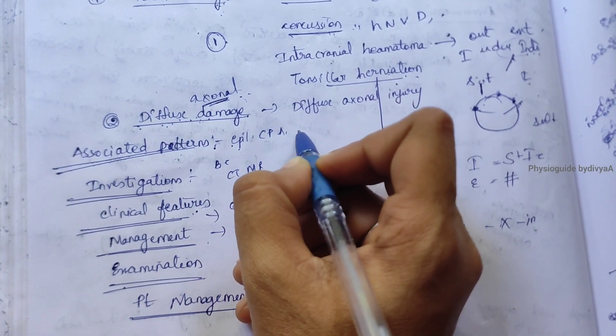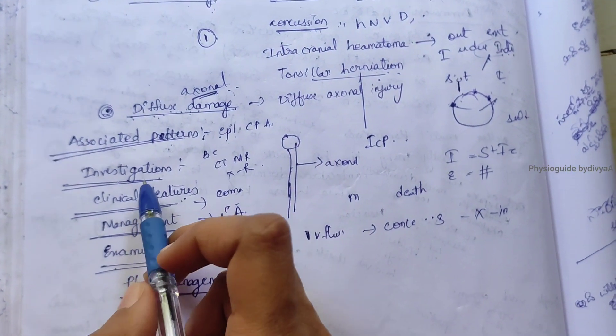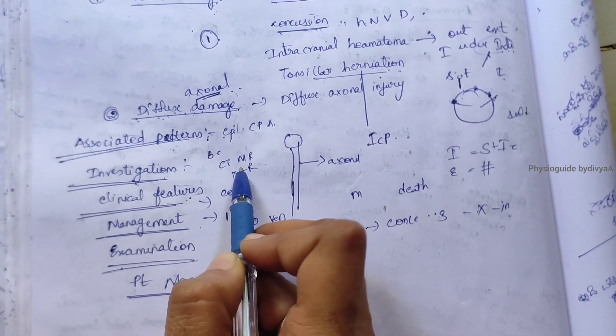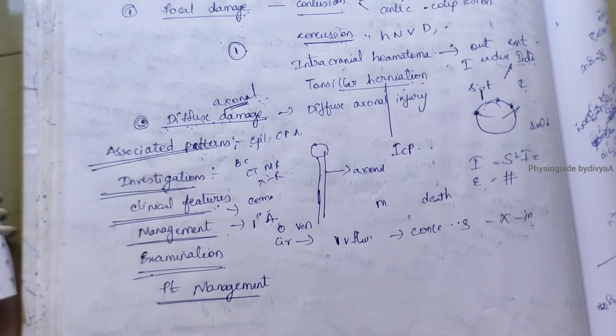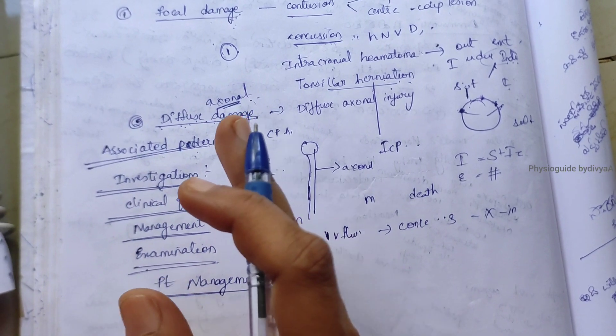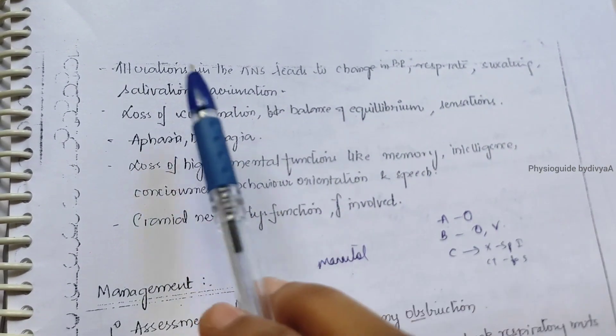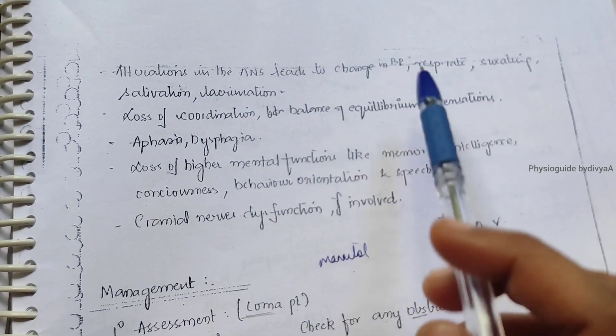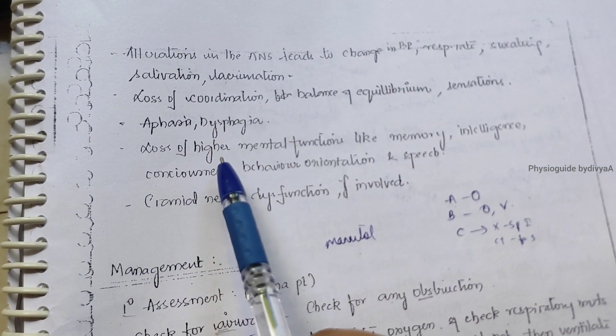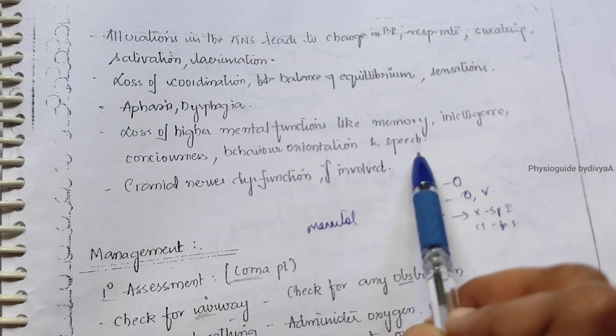Investigations include routine blood examination, x-rays, CT scan, and MRI. Clinical features are altered level of consciousness like coma or stupor, changes in BP, respiratory rate, sweating, and salivation. There will be loss of coordination, balance, aphasia, dysphasia, loss of higher mental functions like memory, intellect, consciousness, behavior, and speech. Cranial nerve dysfunctions are also involved.